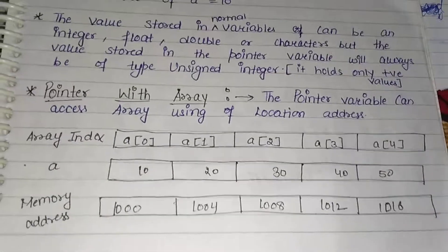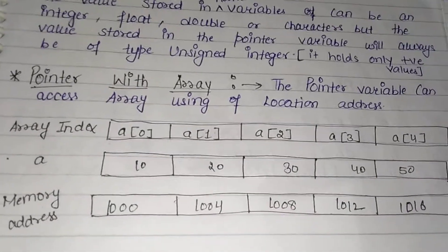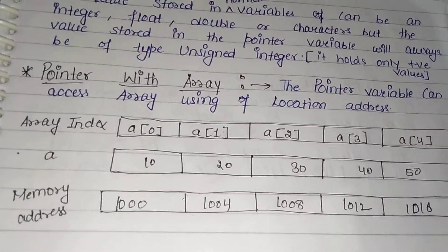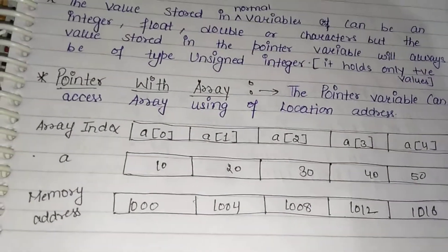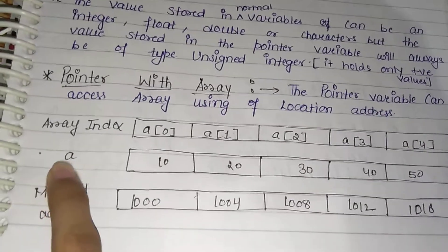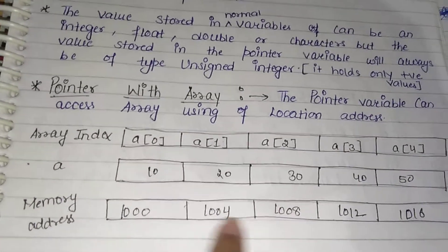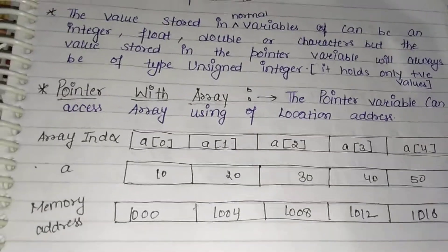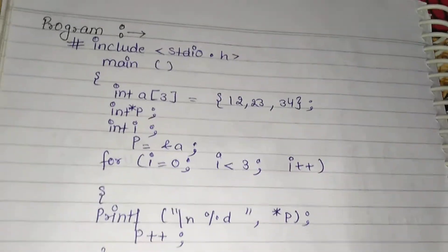The next topic is pointer with array. A pointer variable can access an array using its memory location address. A pointer variable can access array elements by using the location address, the array index, or the memory address directly.